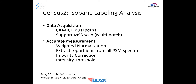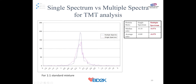We have a Census 2 software update. It supports CID and HCD dual scan, and also supports MS3 scans. So if you have a Fusion instrument and use a multi-notch approach, it can be analyzed using Census 2 software. It can extract all reporter ions from all spectra, perform impurity correction, and apply an intensity threshold. Instead of using a single best spectrum, if you use multiple spectra, you can see much better results.